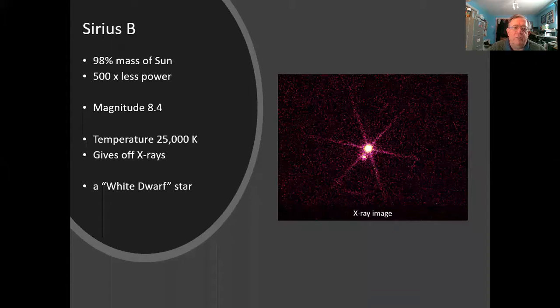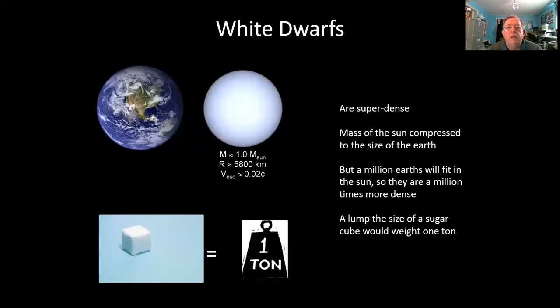What we know about them is that they are super dense. They pack something like the mass of the sun, in the case of Sirius B 0.98 solar masses, into a radius about the same size as the Earth or even a little bit smaller. That's quite curious because a million Earths would be needed to fill the volume of the sun. So on average, white dwarfs are a million times more dense than the planet Earth is. You can work out that a sugar cube would weigh a ton.